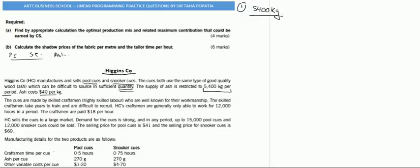The second paragraph says that the cues are made by skilled craftsmen who are well known for their workmanship. The skilled craftsmen take years to train and are difficult to recruit. HCCC's craftsmen are generally only able to work for 12,000 hours in a period. The craftsmen are paid $18 per hour. So now we know that the craftsmen have 12,000 hours available. We have two limiting factors: first is material that is available to us, and second is labor hours that are available to us.